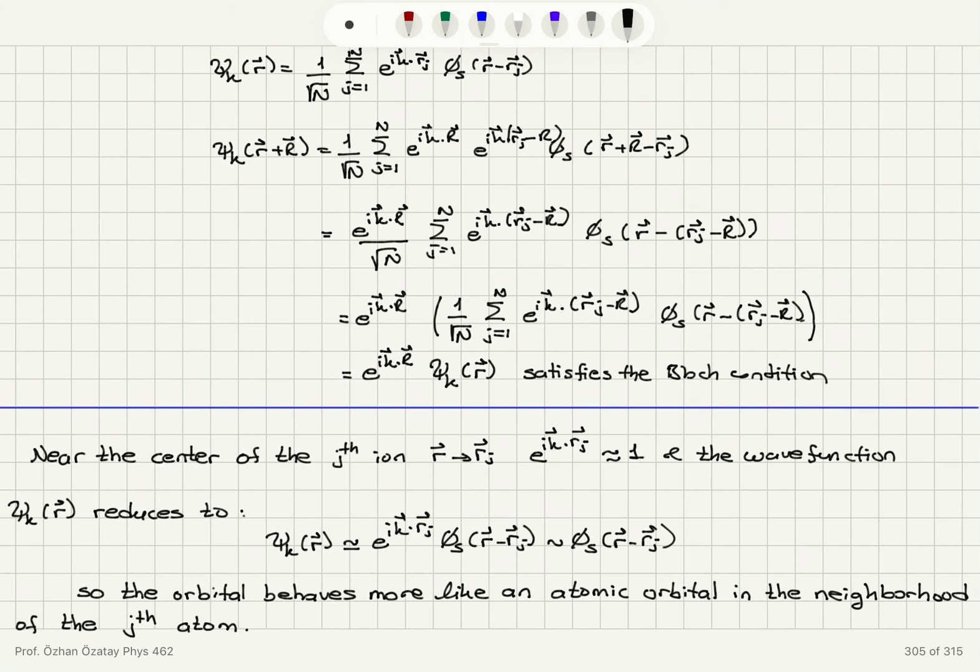so the wave function is behaving like the atomic orbital close to the atom and as I go away from the atom it decays quite rapidly. It satisfies the Bloch condition when I translate by a direct lattice vector capital R I just gain a phase e to the i k dot capital R